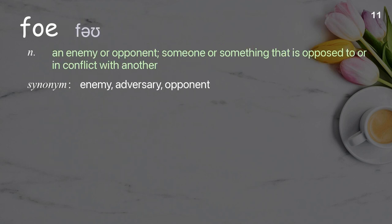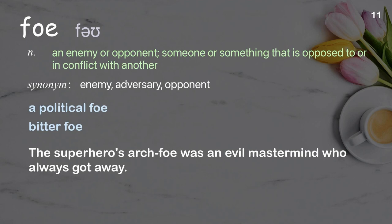Foe: An enemy or opponent, someone or something that is opposed to or in conflict with another. Examples: A political foe, bitter foe. The superhero's arch foe was an evil mastermind who always got away.